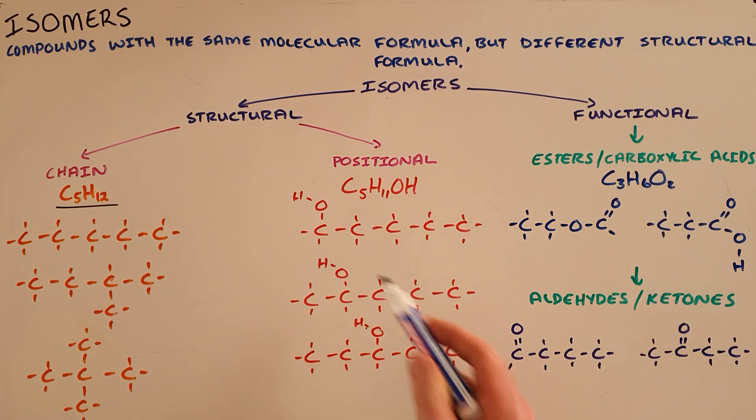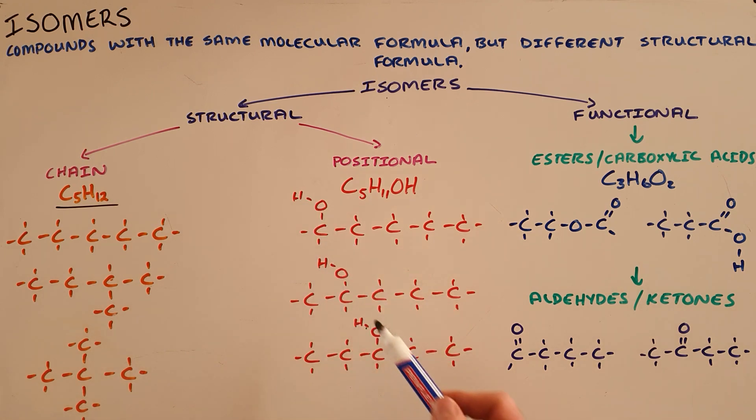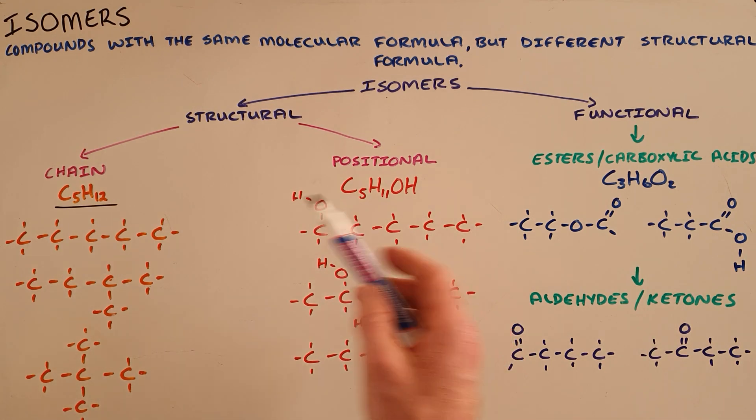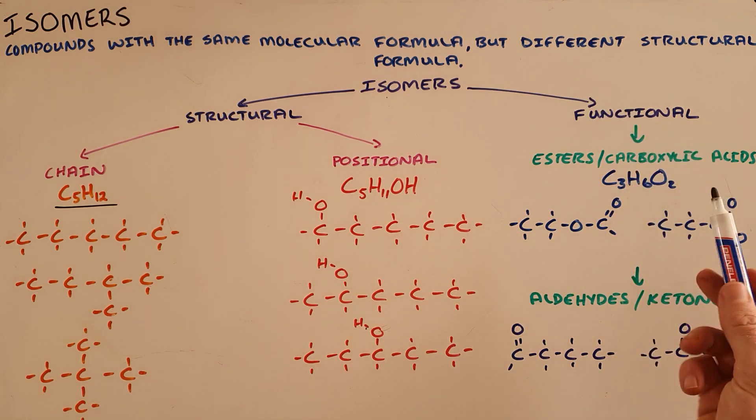And in the third scenario the chain length remains the same once again but the hydroxyl group is now on the third carbon. These are said to be positional isomers of each other because all that has changed is the position of one of the groups on that molecule. Once again, chain and positional isomers are both examples of structural isomers.